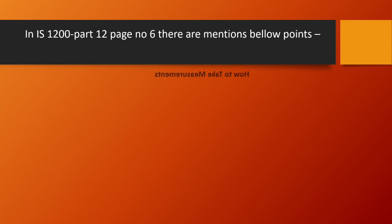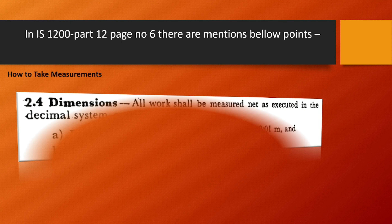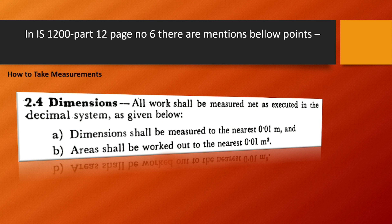The mode of measurement is like this. Point number 1: Reduction shall be measured to nearest 0.01 meter. Area shall be worked out to nearest 0.01 square meter.